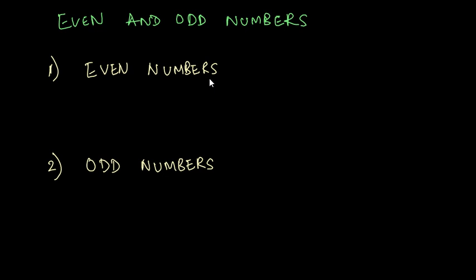Even and odd numbers. Any number can be either an even number or an odd number. So what is an even number? An even number is a number which is divisible by 2.